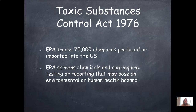The Toxic Substances Control Act of 1976 — the EPA tracks about 75,000 chemicals produced or imported into the U.S. They are screened and may require testing or reporting if they pose an environmental or human health hazard. This act helps control chemicals, whether natural or manufactured, that may cause harm to air, soil, or water, which in turn helps reduce human health hazards.